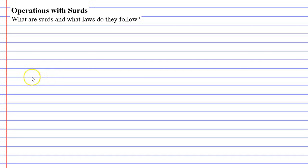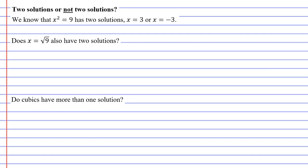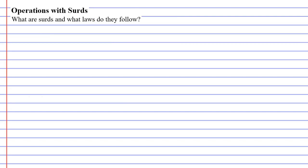We're starting a chapter called Operations with Surds, and in this video we're going to do a couple of things to introduce this chapter. First of all, we're going to talk about what surds are, and then we're going to have a little lesson which I call Two Solutions or Not Two Solutions.